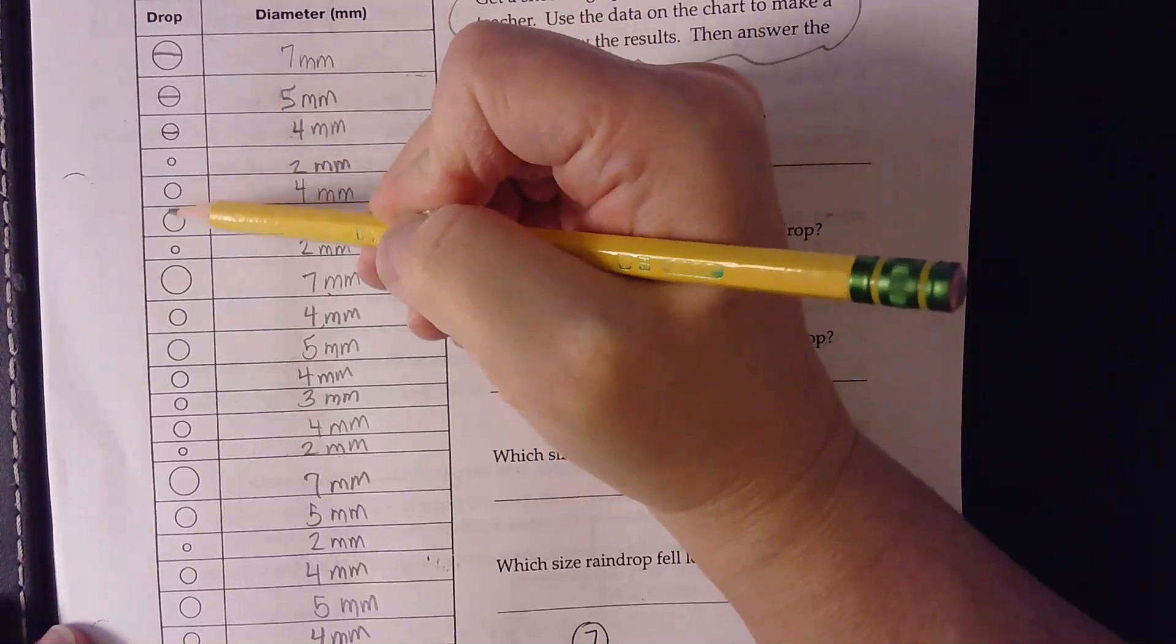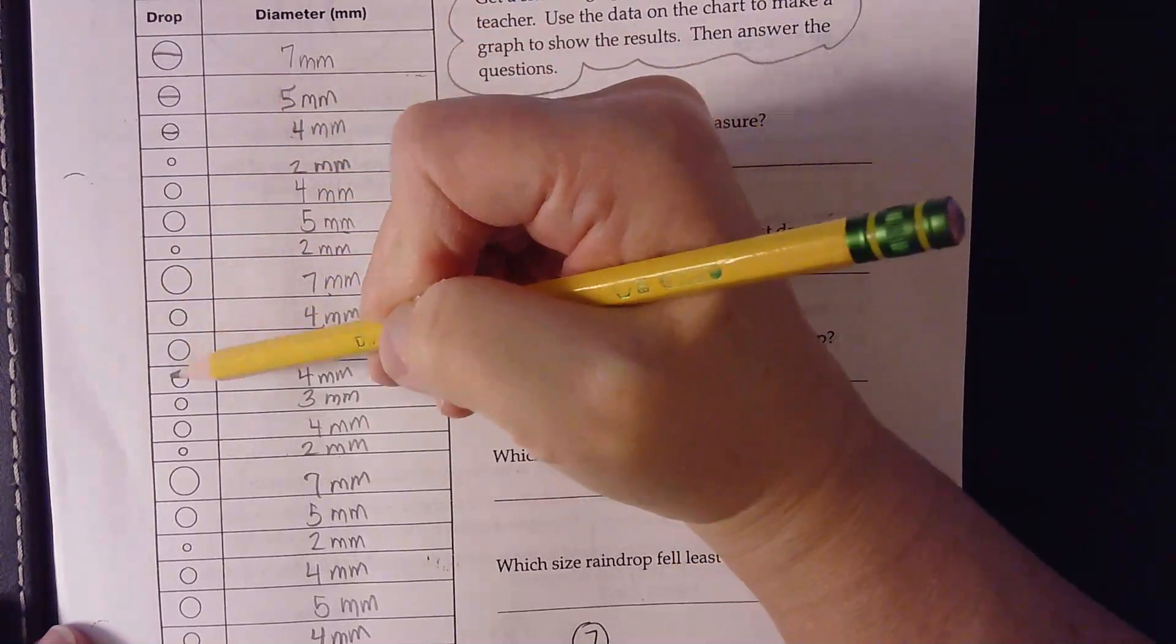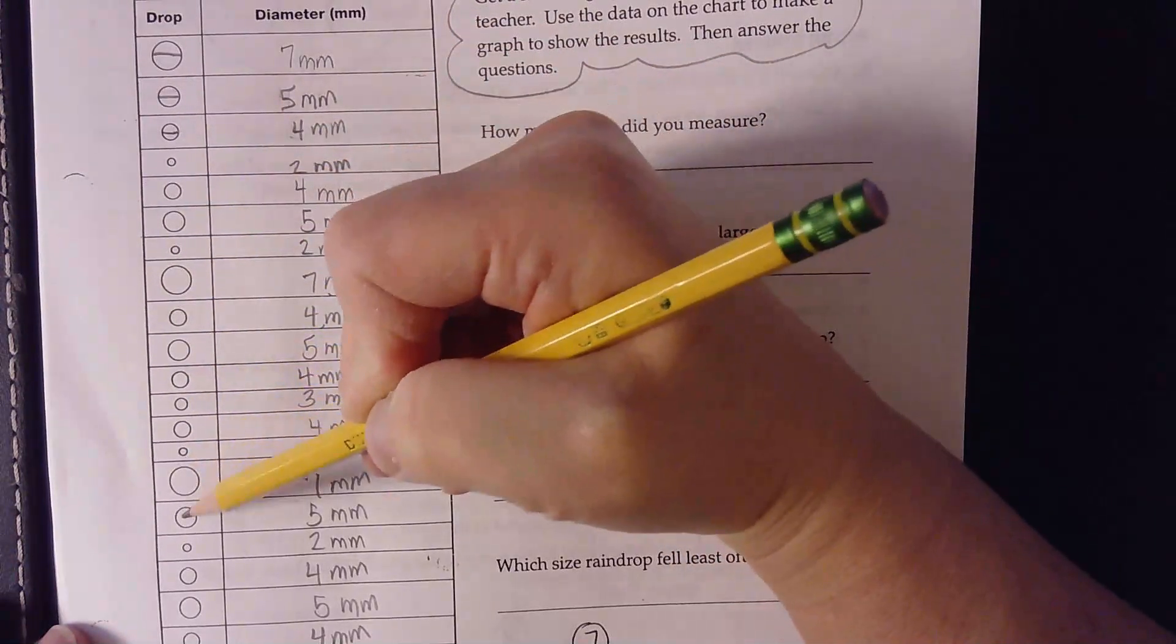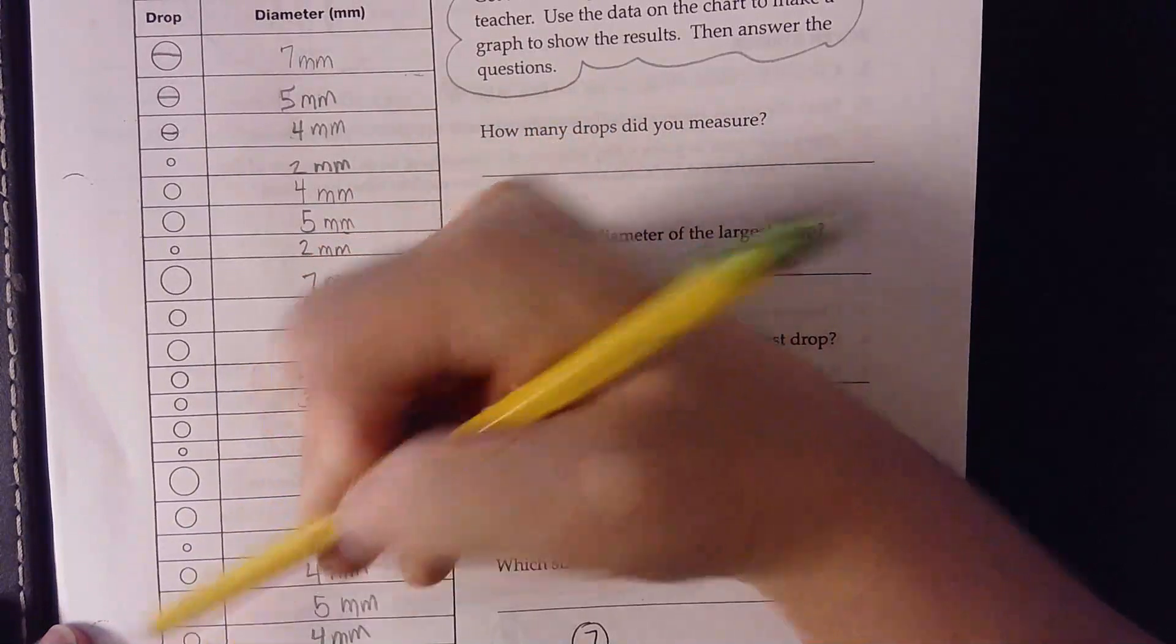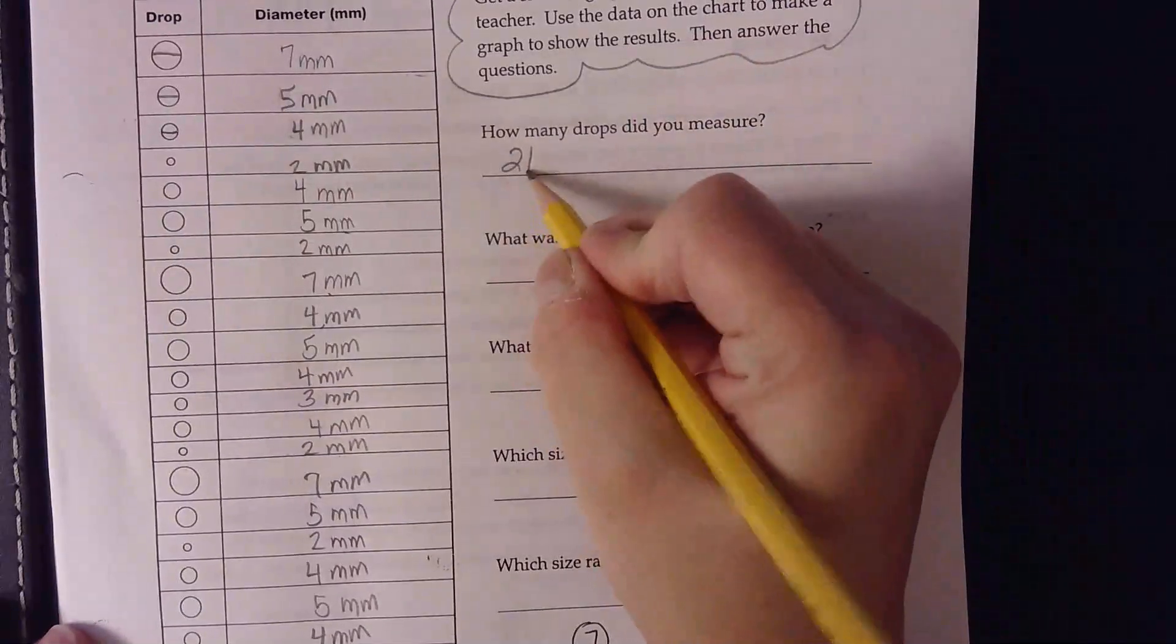One, two, three, four, five, six, seven, eight, nine, ten, eleven, twelve, thirteen, fourteen, fifteen, sixteen, seventeen, eighteen, nineteen, twenty, twenty-one.